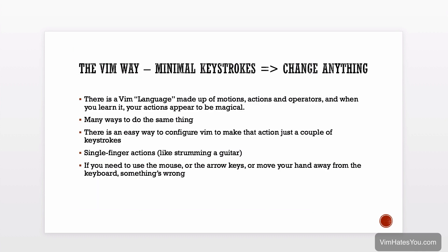The Vim way is about minimal keystrokes to change anything you want. It's about learning a language made of motions, actions, and operators to understand the text you want to move through and change — kind of like a surgical strike team. There are usually many ways to do the same thing. The idea is that you're supposed to be only using your hand on the keyboard, not using the mouse, not even using the arrow keys. If you find yourself using arrow keys or the mouse, there's usually already an action in Vim, or you can configure Vim to create one.